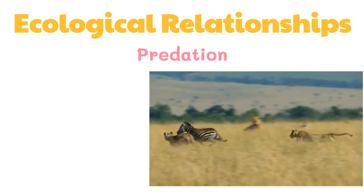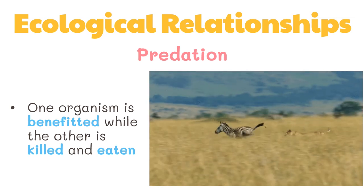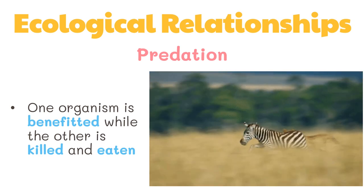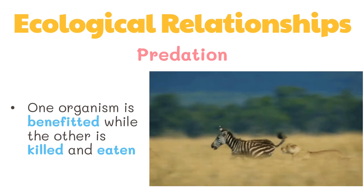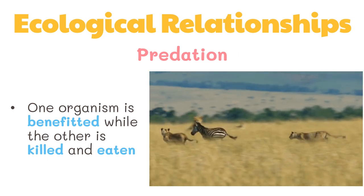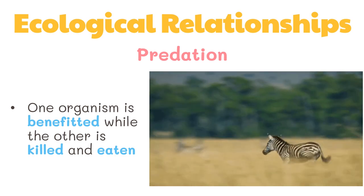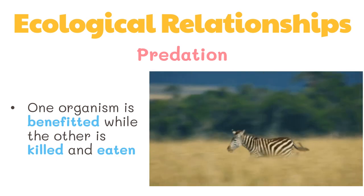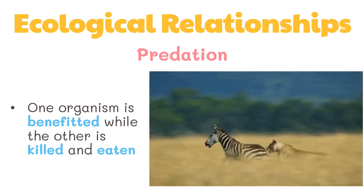Predation is a food-getting relationship where one organism is benefited while the other is killed and eaten. An animal that kills and eats other animals is called a predator, and the animal that is killed is called prey. Prey are less powerful than their predators. In the wild, a predator may itself become prey to a larger, stronger predator.